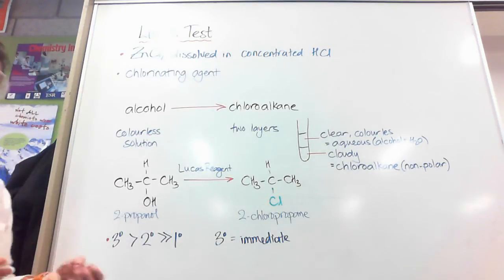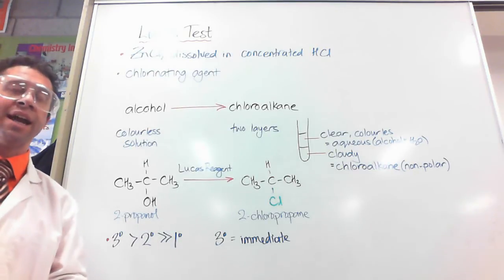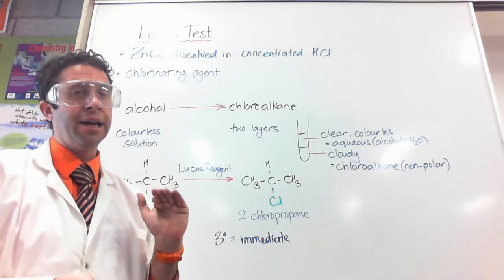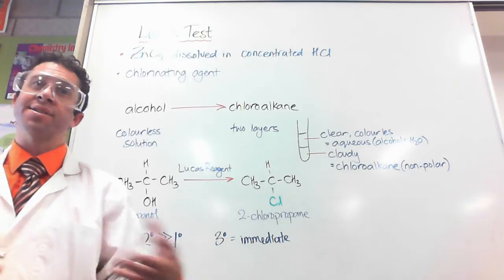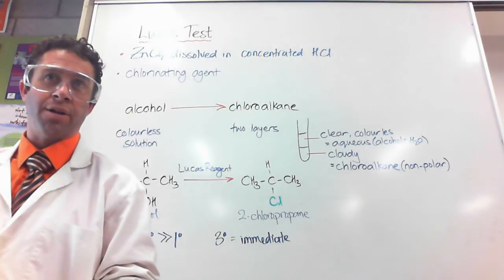So this can be used to tell if we've got a primary, secondary, or tertiary as well, by looking at the rate of reaction. If it makes two layers immediately, and that thing does not oxidise, so it doesn't have a colour change with dichromate or permanganate, then we know it's a tertiary alcohol.